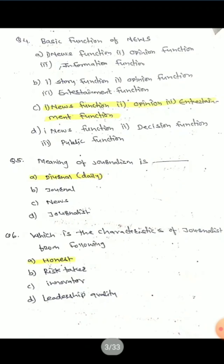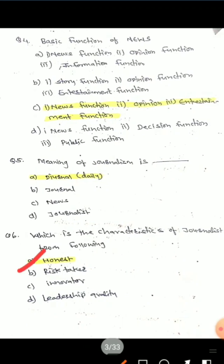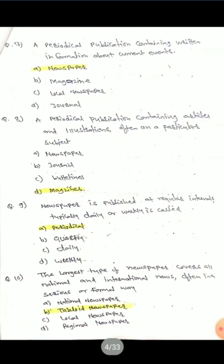Question 6: Which is the characteristic of a journalist from the following? Options include: honest, risk taker, innovator, and leadership quality. The correct answer is 'honest.' Honest is the characteristic of a journalist. Go through all the characteristics of a journalist.